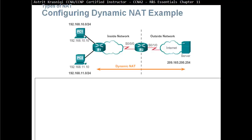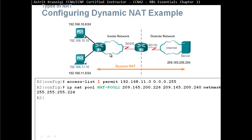To configure dynamic NAT, first we create an access list that permits the network we want to translate — for example, permitting the network connected to PC2. Then we create a pool which defines what public address range we have, such as 'IP NAT pool' followed by a name, the start of the public addresses, and the end — for example, from .226 to .240, those are the public addresses we have purchased.